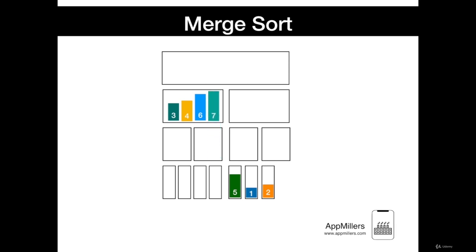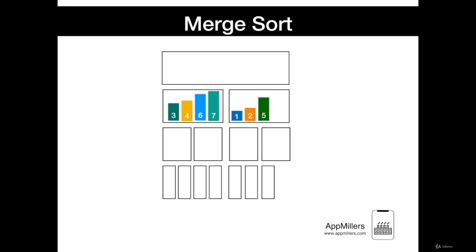Then we continue to combine the right group. In this case, we compare 1 with 2; 1 is smaller, so it is moved first. Then we compare 2 with 5; 2 is less, so 2 is moved, and then 5 is moved. Finally, we combine the last two groups.